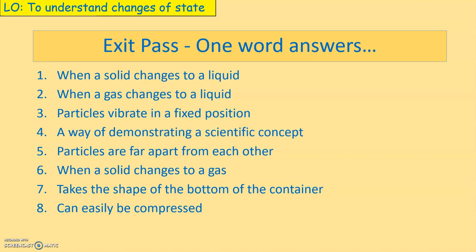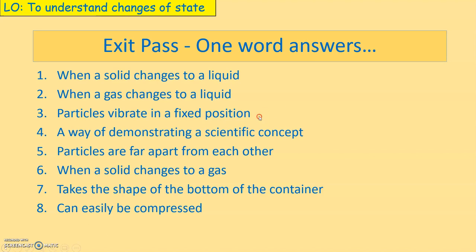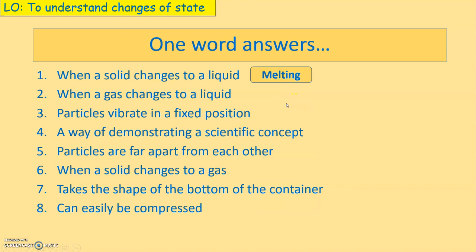The first question: when a solid changes to a liquid, what term do we use to describe that? The answer is melting. The process by which a solid changes to a liquid is called melting — for example, ice melting to become liquid.